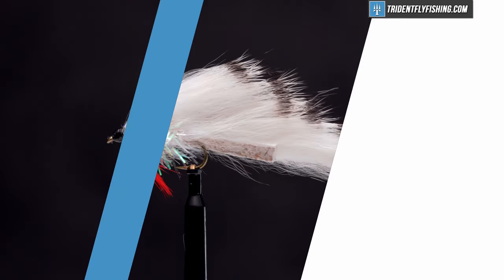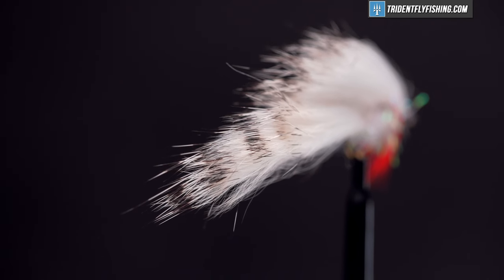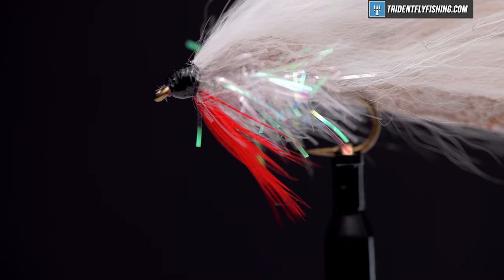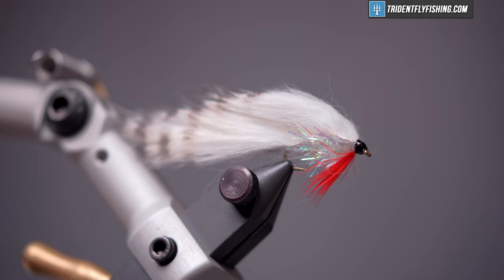There's many variations of this zonker streamer out there and it can be tied with bead chain eyes, lead eyes, lead wraps around the hook shank, or just weightless. Tie it in colors to match the fry the fish are chasing in your favorite stream or in just bright colors as an attractor fly. So here's the fly in the vise.